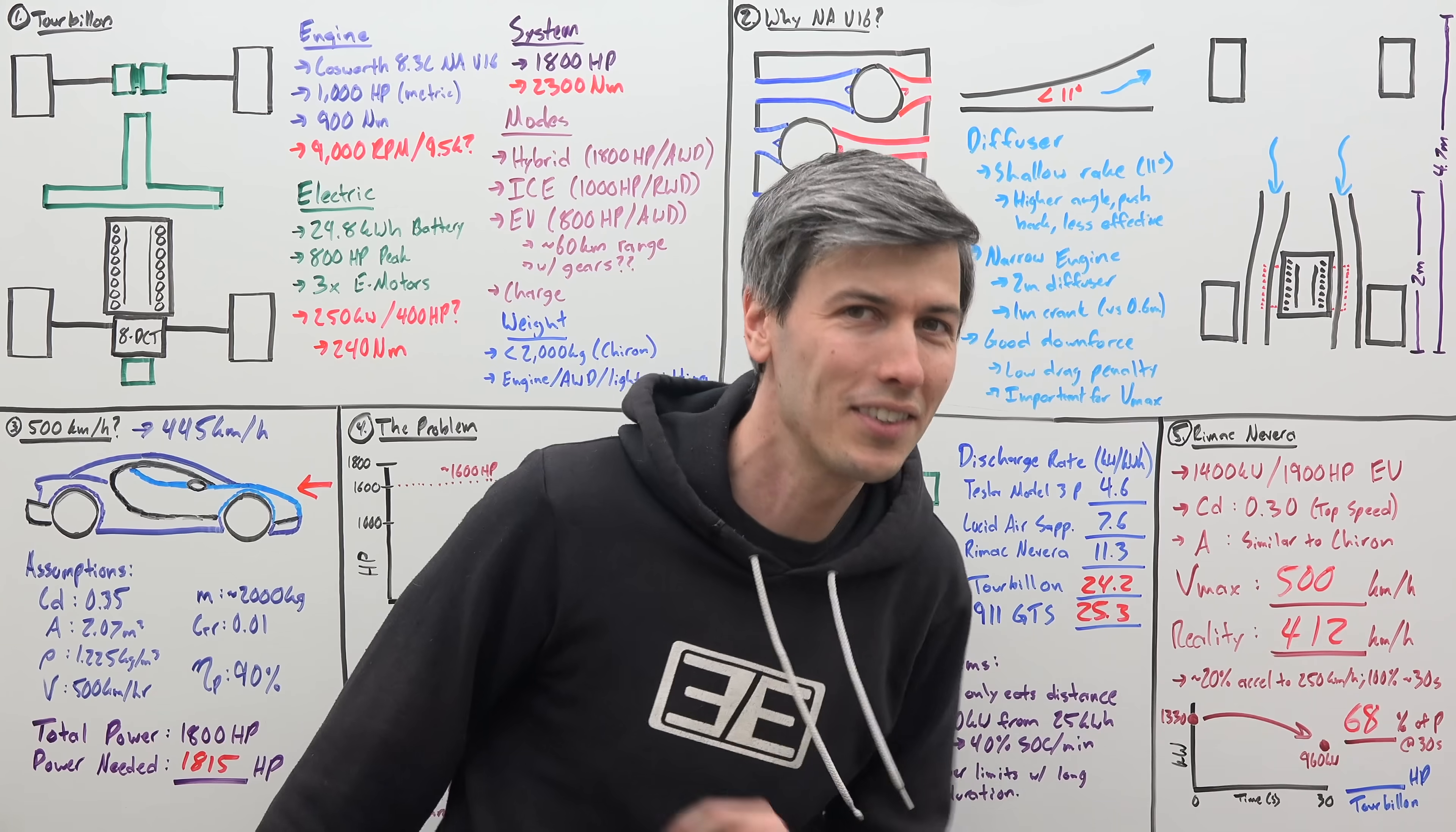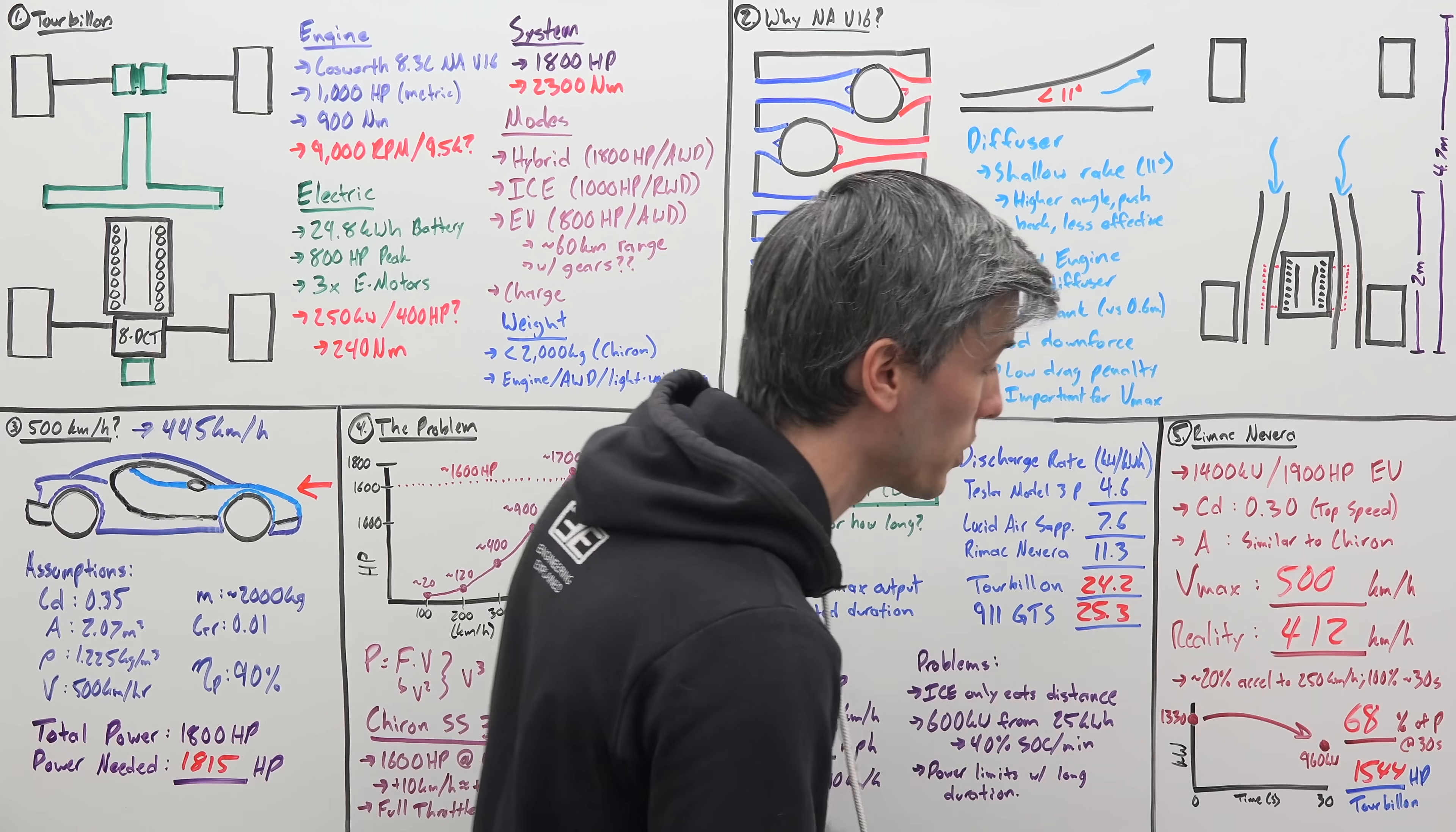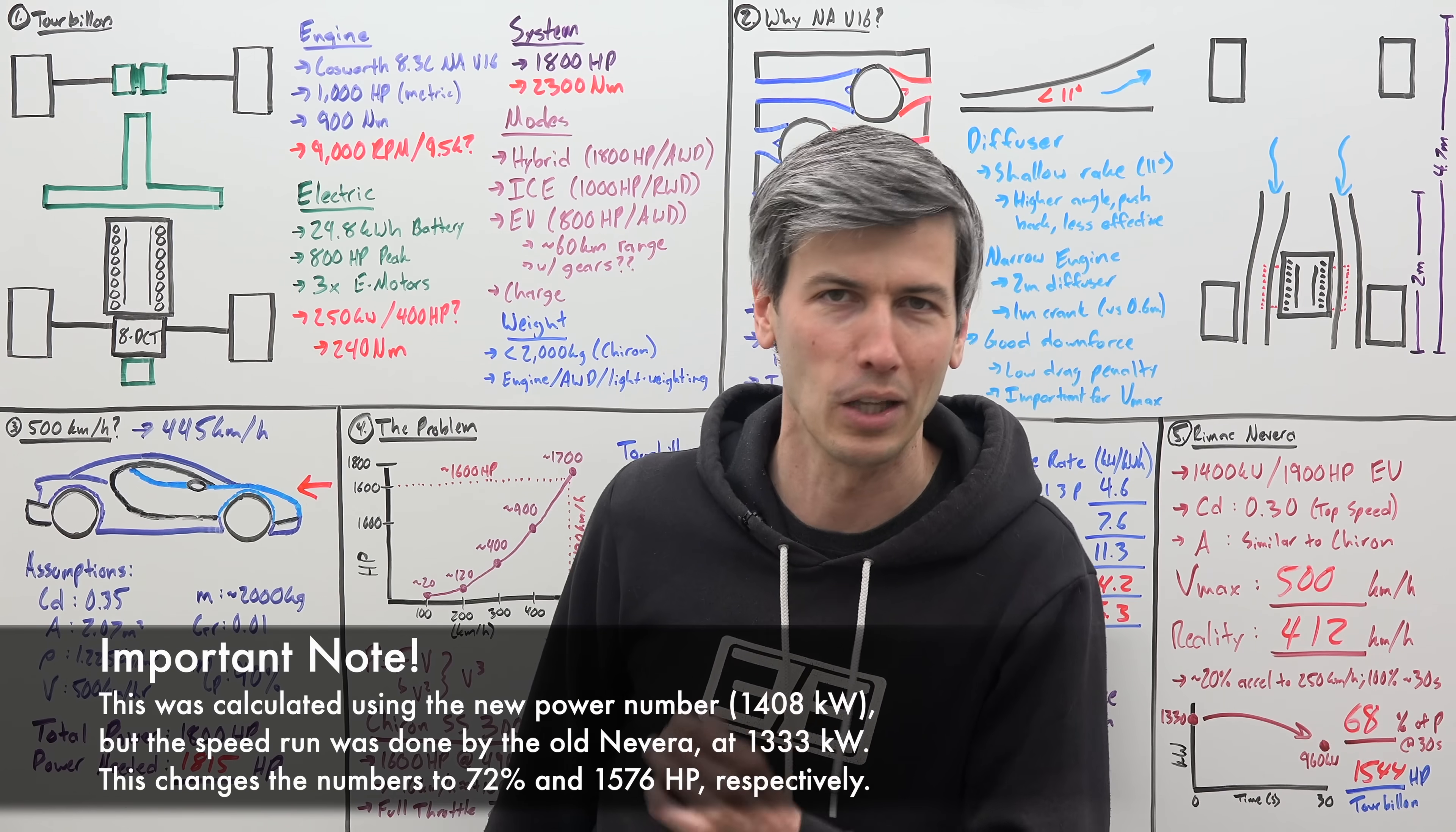So if we take that 68% number, multiply it by our 800 horsepower and say, after 30 seconds of full throttle acceleration, we have 68% of 800. That puts us at 1544 horsepower, which probably isn't enough to hit 500 kilometers per hour. So they have a very real challenge here with this battery in order to hit a top speed of 500 kilometers per hour.